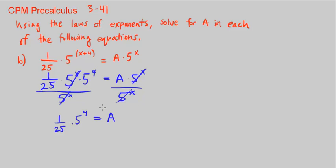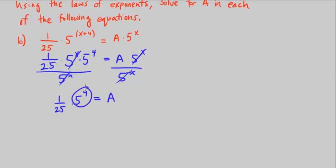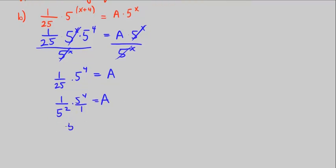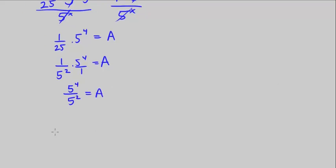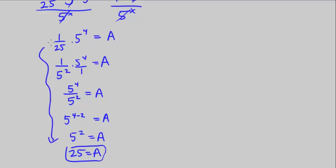What is 5 to the 4? I can write 1 over 25 as 1 over 5 squared. That's 5 to the 4 over 1, which equals 5 to the 4 over 5 squared. That's the same as 5 to the 4 minus 2, which is 5 squared, which is 25. I did a lot of steps here. Some of you might skip these, but we get a equals 25.